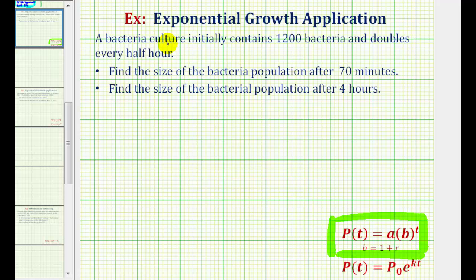Looking at the given information, we're starting with 1,200 bacteria, which means P of 0 equals 1,200, meaning when t equals 0, there are 1,200 bacteria. So this is telling us that the initial amount, or A, must equal 1,200.